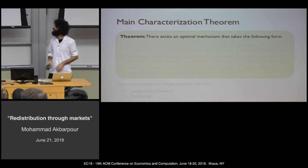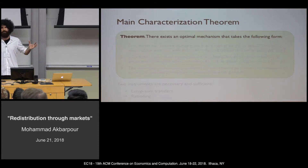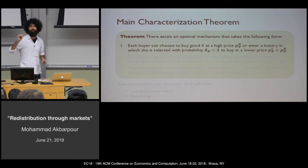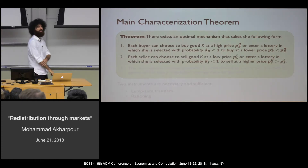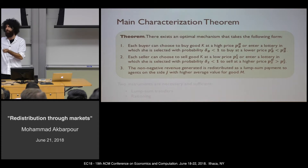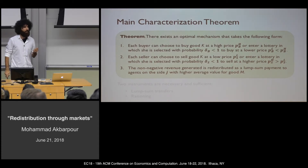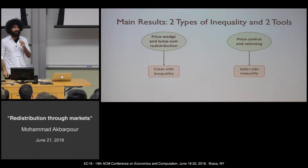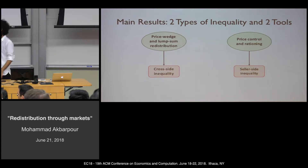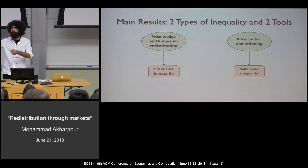The form of the optimal mechanism turns out to be simple despite the complex space. Buyers have two prices: a high price at which they buy with probability 1, and a low price with some rationing probability. Sellers have the same structure: a low price at which they sell with probability 1, and a high price with rationing. Any revenue generated is redistributed as a lump-sum transfer to the side of the market with the higher average value for money.